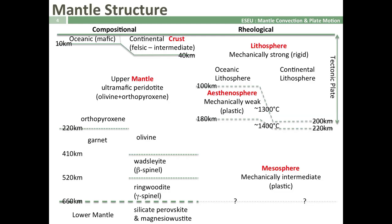Note that the textbook definition for the base of the asthenosphere is really very poorly defined — I've seen depths of 180, 220, 350, 400, 660, and 700 kilometres all given. I've taken here the transition between what we suspect is a very mechanically weak, low-viscosity layer, which we can define using the low velocity zone within the Earth's mantle.